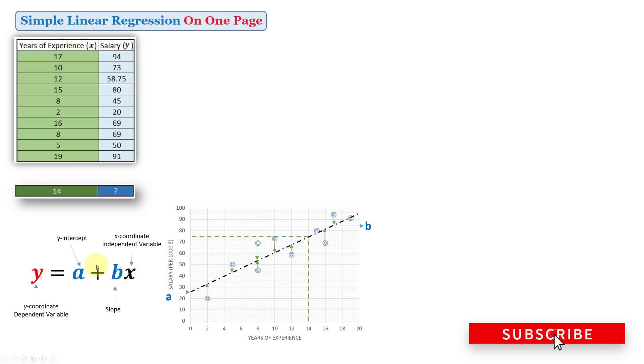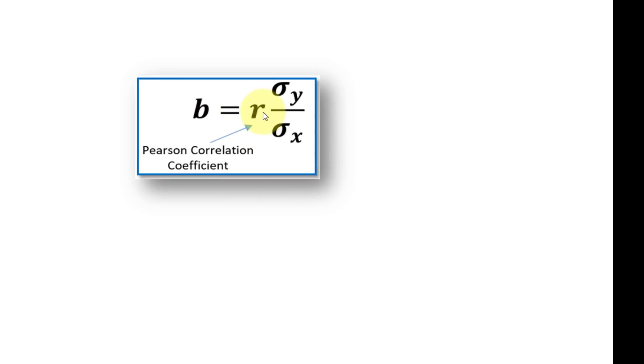So let's look at the formulas on how we can actually calculate a and b, because if we have these two, then the problem is solved. b is equal to r times the standard deviation of y divided by the standard deviation of x, and r in this case is the correlation coefficient. But how to calculate r? So r is equal to the summation of (x minus x̄)(y minus ȳ) divided by the square root of the summation of (x minus x̄)² times the summation of (y minus ȳ)². x̄ is actually the average of x values and ȳ is the average of y values.